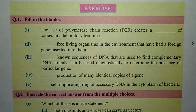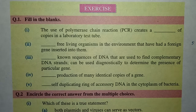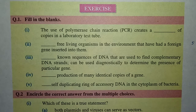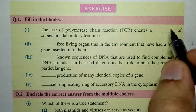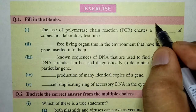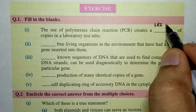Let's go to the first filling the blank: 'The use of polymerase chain reaction, PCR, creates a dash of copies in a laboratory test tube.' The answer here is 'lesser number' — so lesser number of copies in a laboratory test tube.